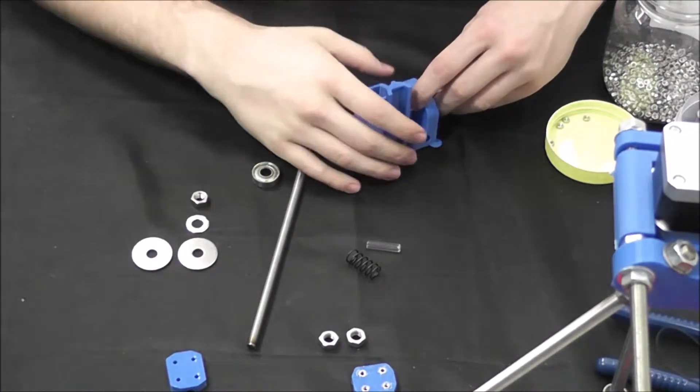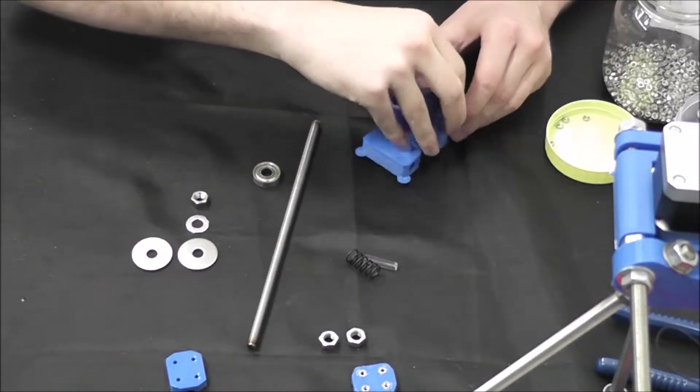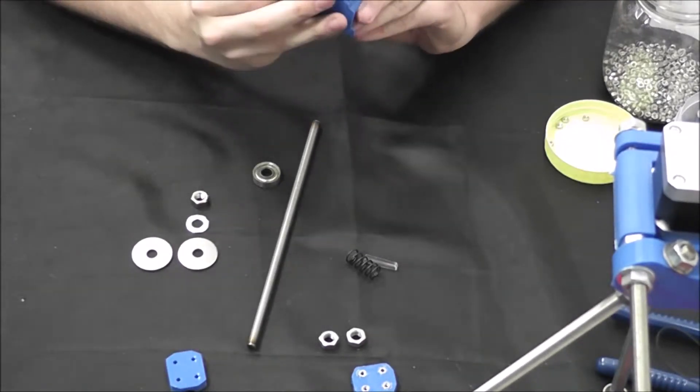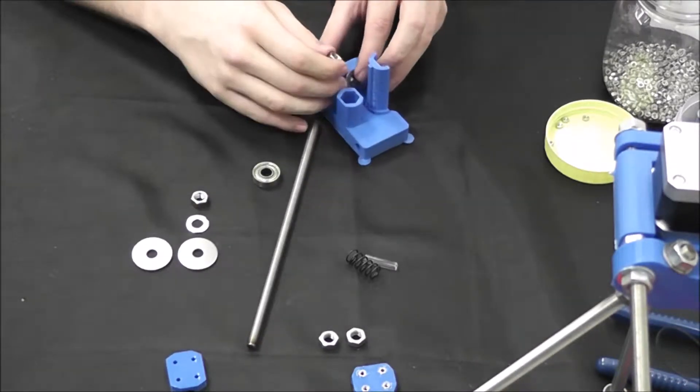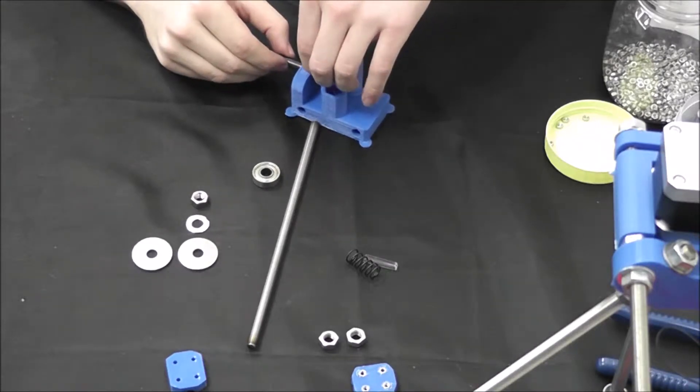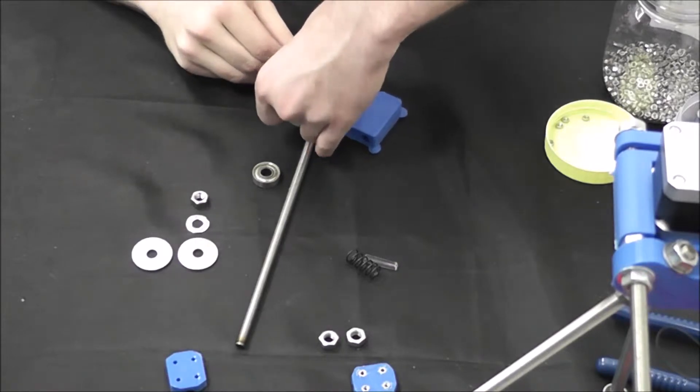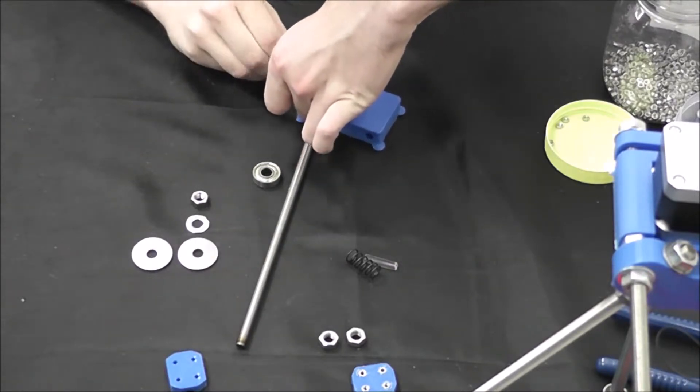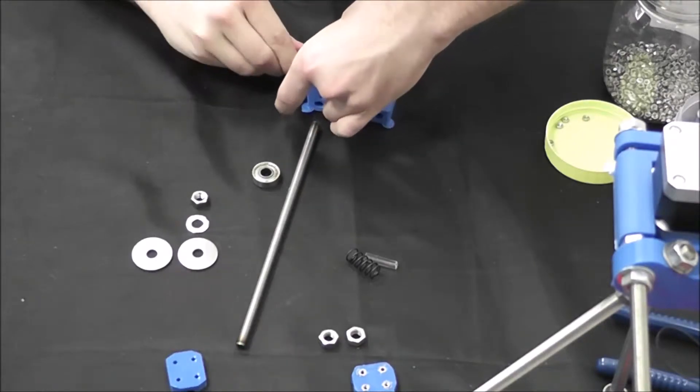It might take a second, but once you get it there it'll stay. Got the washer looped on, gotta get the nut. If you have bigger fingers too, it's harder to line them up. All right, it is through. Now we just have to slowly get the nut in, and we're in.